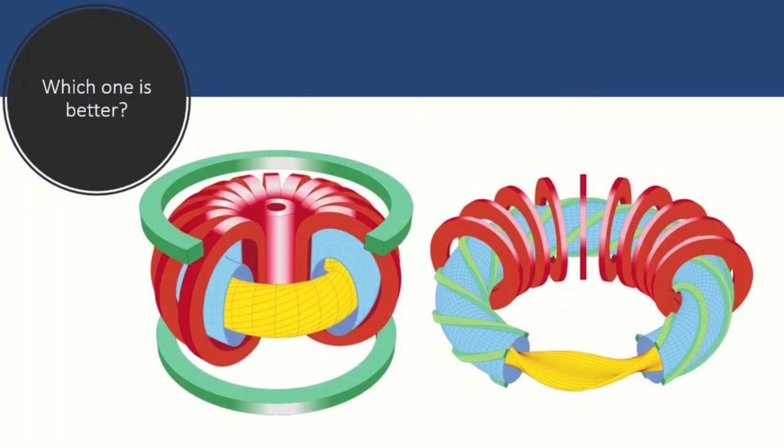The reactor design that is best is unclear. Tokamaks are simpler, but Stellarators may be better at sustaining a stable reaction. This is why billions of dollars are being spent on nuclear fusion research. Two major nuclear reactor projects are currently underway in the world that will hopefully bring clarity to which reactor design is best.